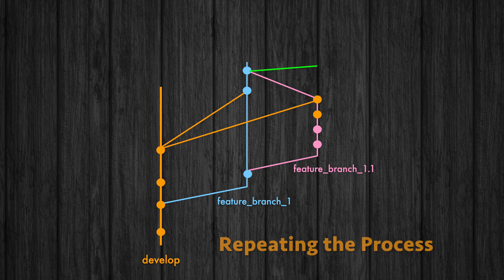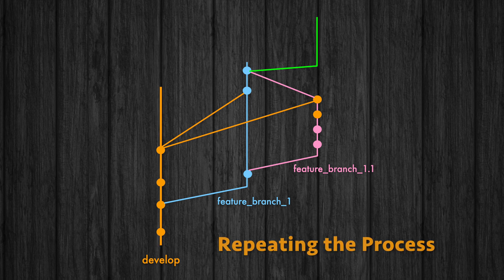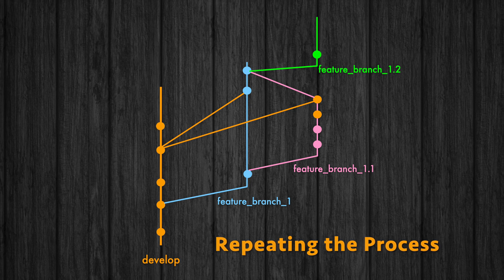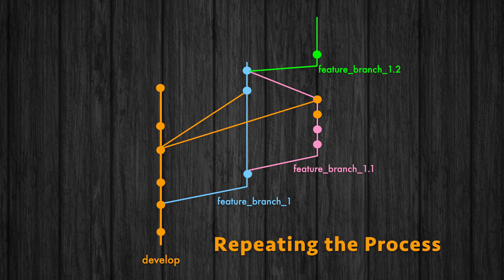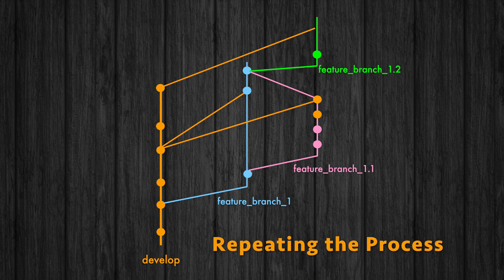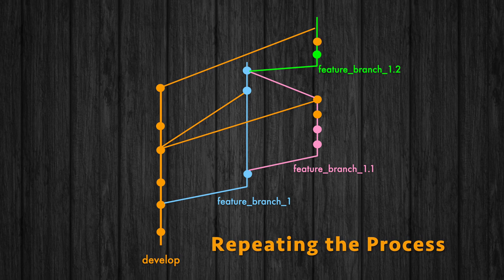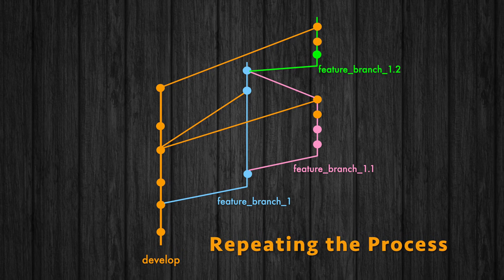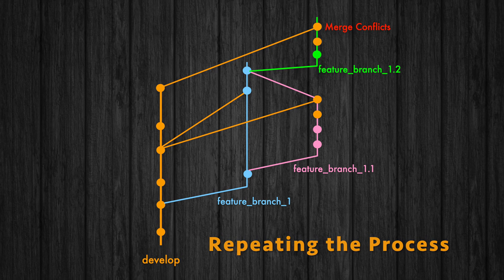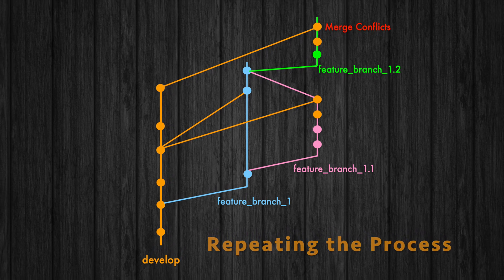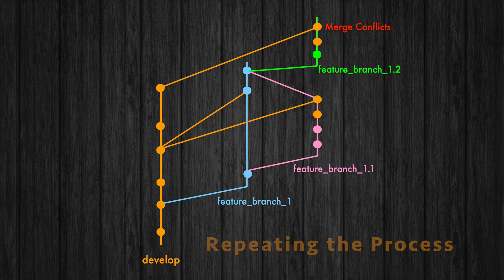You create another sub-feature branch from FeatureBranch1 called FeatureBranch102 and start working on it. When it's time to update FeatureBranch102 with the latest changes from develop, you merge develop into FeatureBranch102 on your local machine. To your frustration, you face the same merge conflicts you dealt with before and have to manually resolve them again in your code editor.